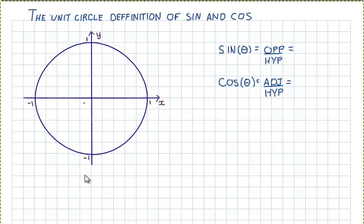In this video we'll be looking at defining sin and cos using the unit circle. So say we have a unit circle here and we have a line going from the origin of our axis to the edge of the circle.